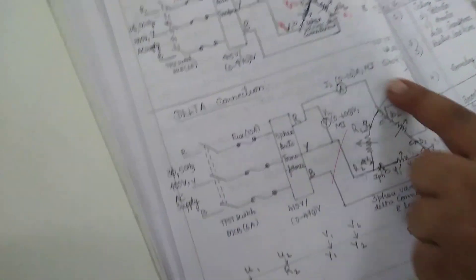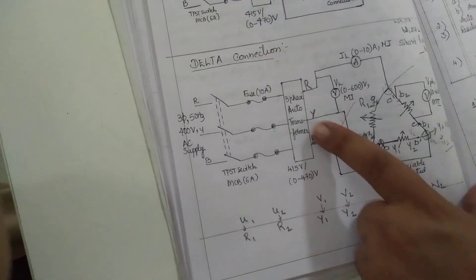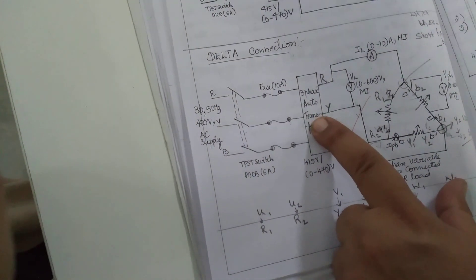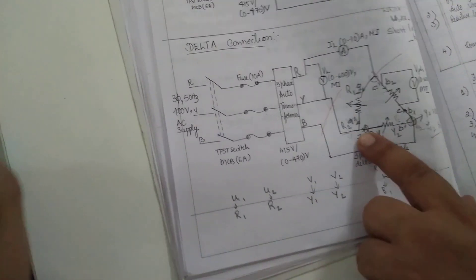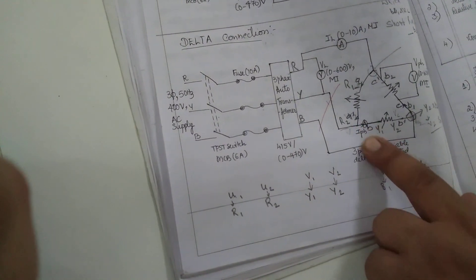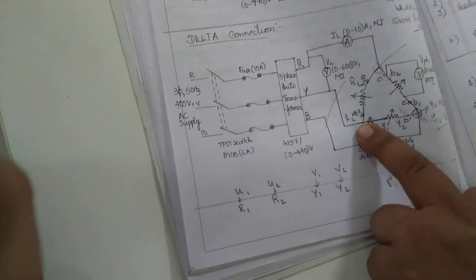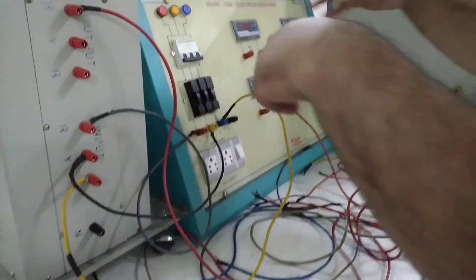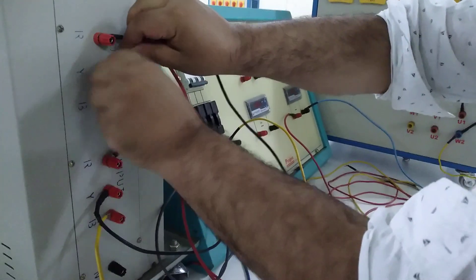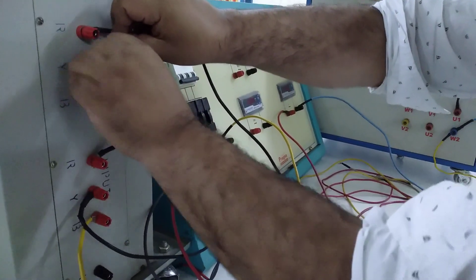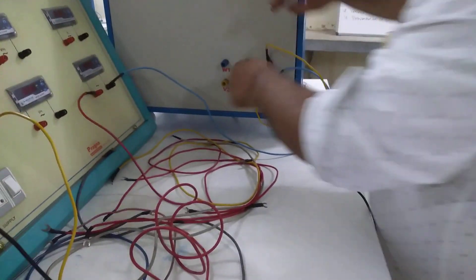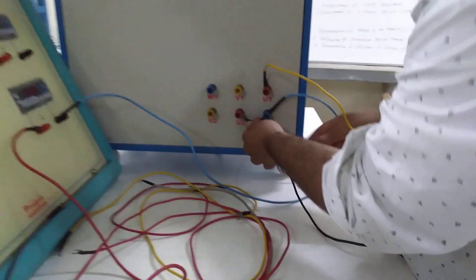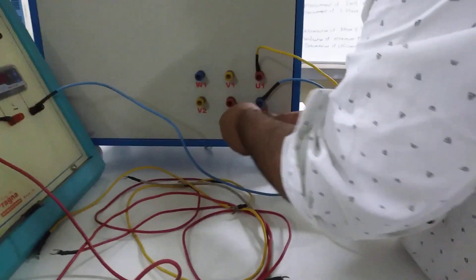So this is the connection that I have done. Now, this up to here I have done, so this R connection is over. Now we will take another series connection from Y. So Y, you see Y2, another connection is going to R2. R2 is nothing but our U2. So Y directly to U2. From Y, Y directly I am going to give it to U2 here.